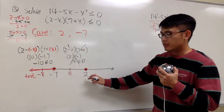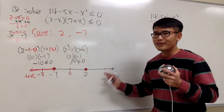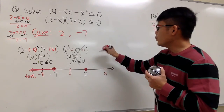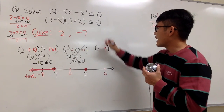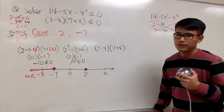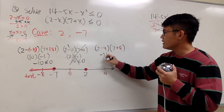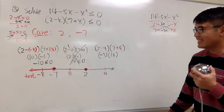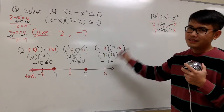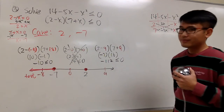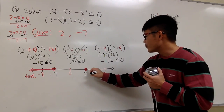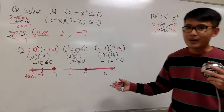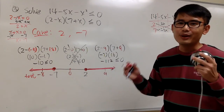At the end, I'll pick a number bigger than 2 — let me use 9. You can pick any number as long as it's bigger than 2. Plugging 9 into x: we have (2 minus 9) times (7 plus 9). For the first parenthesis, that's negative 7. For the second, that's 16. Negative 7 times 16 gives me negative 112. Is this less than or equal to 0? Yes. So I'm going to take this as part of the answer. Now we can write down the inequality and also the interval notation.